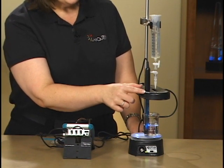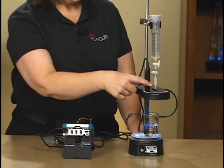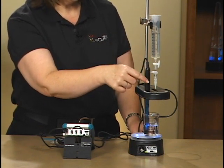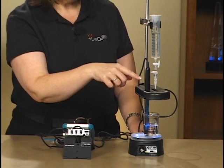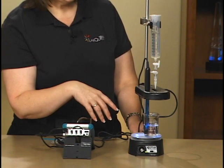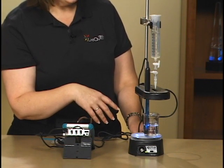The drop counter is this part here. It actually counts the drops that fall through from this reagent reservoir into the beaker and it counts them by breaking a little infrared beam and counting the number of drops. The software then converts that into a volume in milliliters.